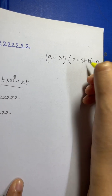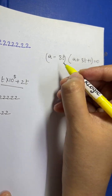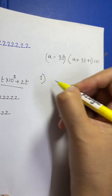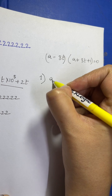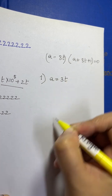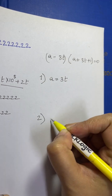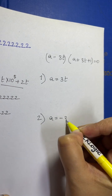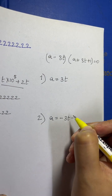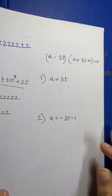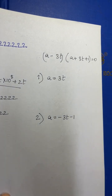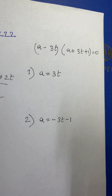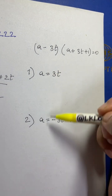So we have two cases to solve. The first case is when a = 3t, and the second case is when a = −3t − 1. We need to solve for both of these cases.